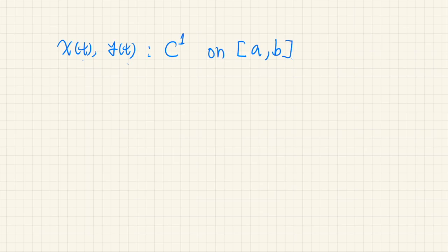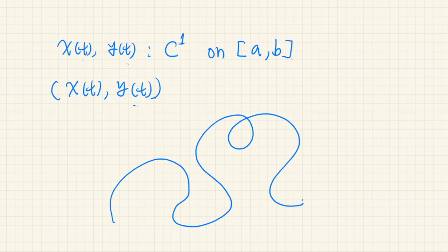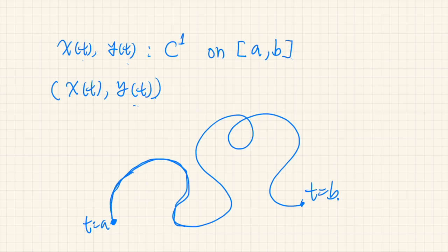If we consider this pair of functions as a point in two-dimensional space — x coordinate and y coordinate — then as we move t from a to b, this point in the plane moves along a curve. When t equals a the point starts somewhere, and as t increases it moves through the plane, stopping when t equals b. The question is: how do we calculate the length of this curve?